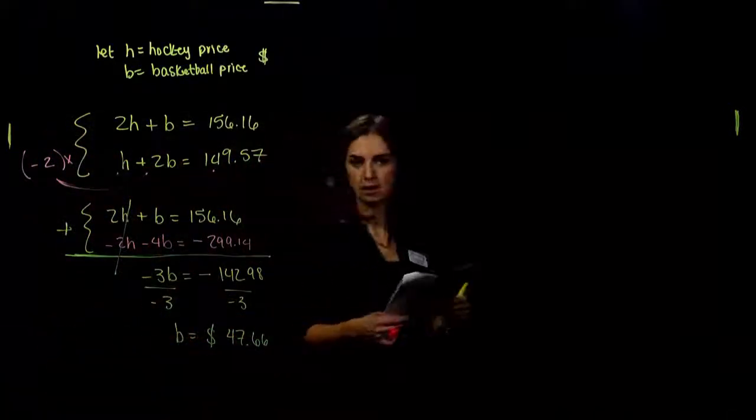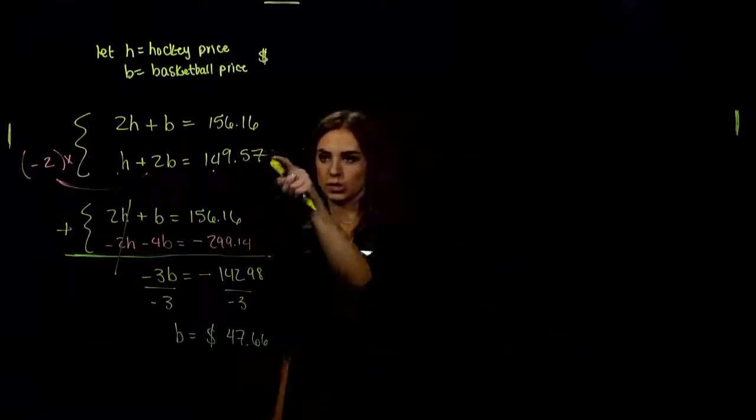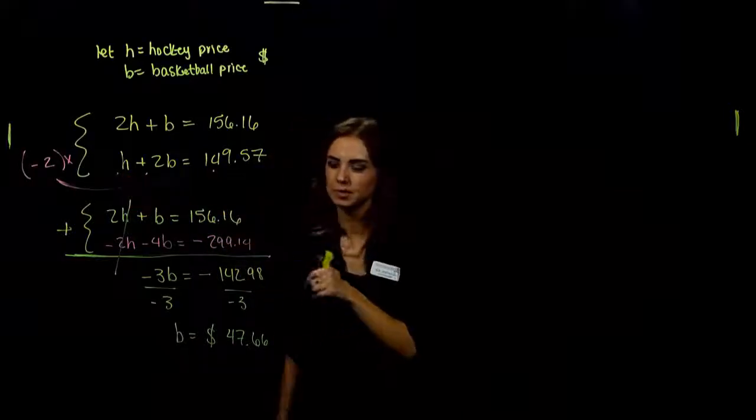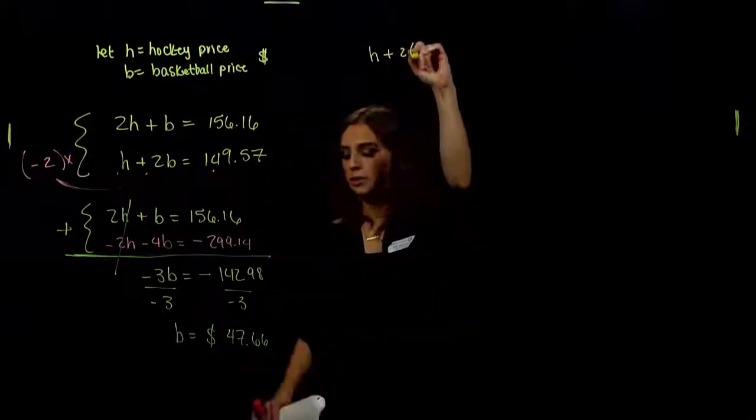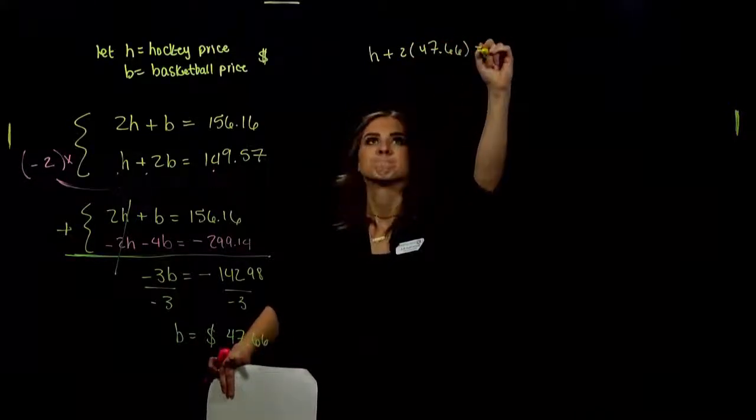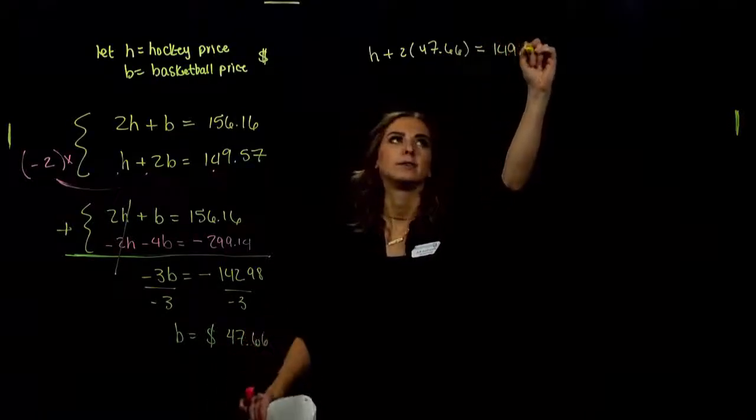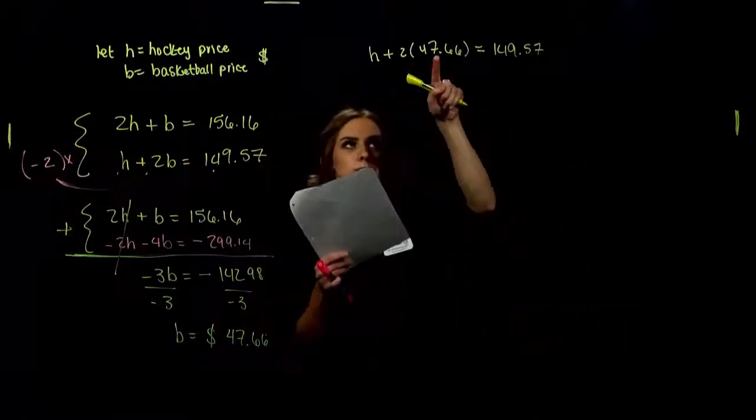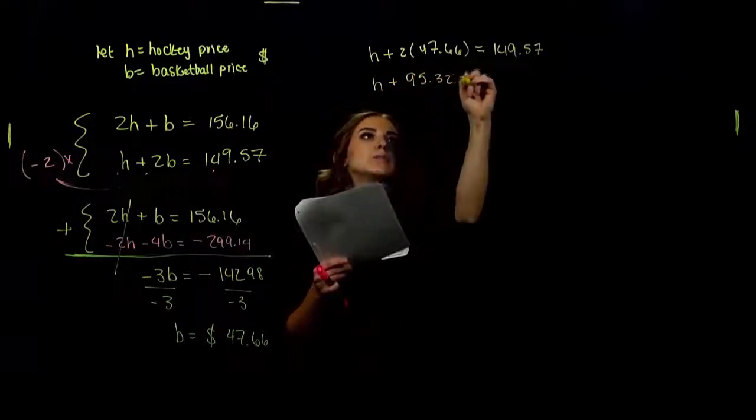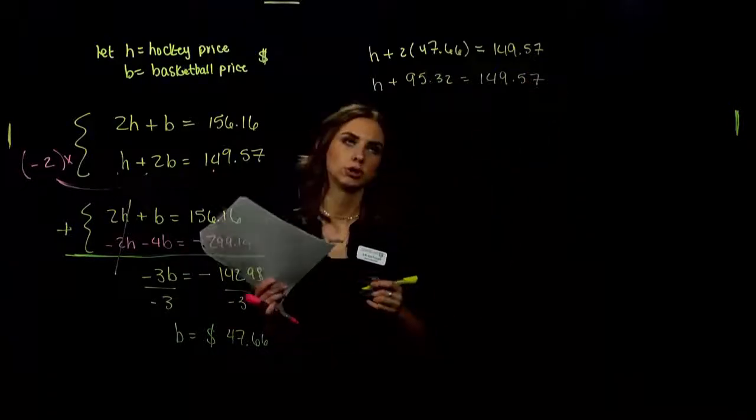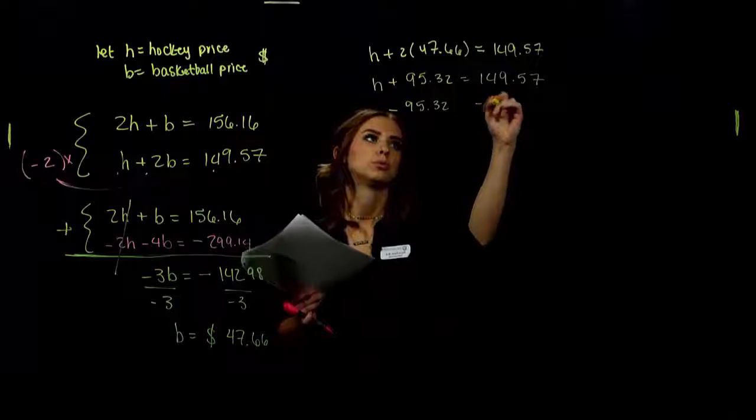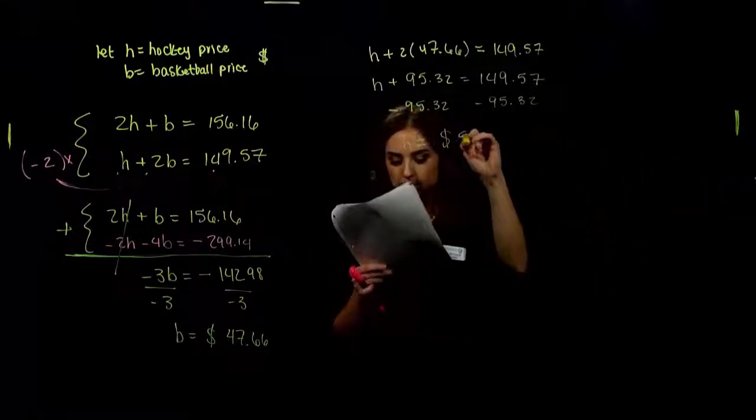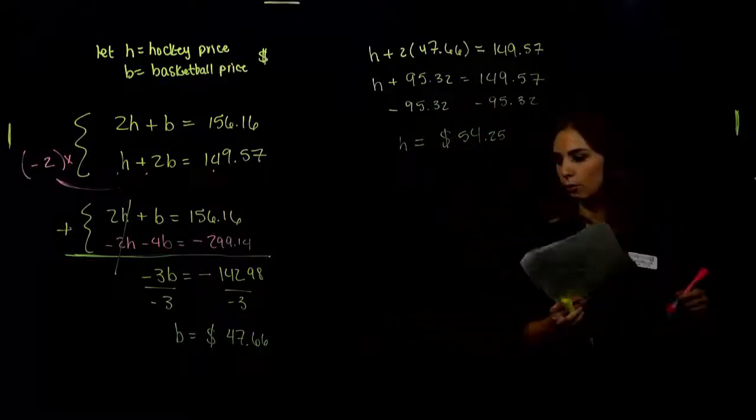But we also want to figure out the hockey. So we can plug it into any one of these equations. And I'm going to pick this second one, because H is already not alone, but it doesn't have a constant out front. It's a little bit less work. So we're trying to solve for H, and I know that the basketball price is 4766. One hockey at two basketball tickets was 14957. So let's calculate what is the actual cost of a hockey ticket. 2 times 4766, we get 9532. And how do we get H alone? Subtract that value. Minus 9532. So H is equal to what? Still positive. We've got 5425. A little bit pricier to go to a hockey game than a basketball game.